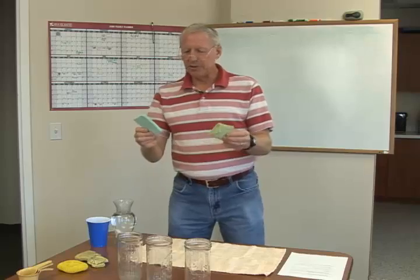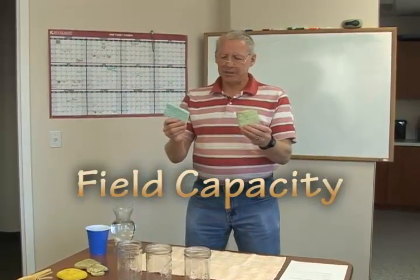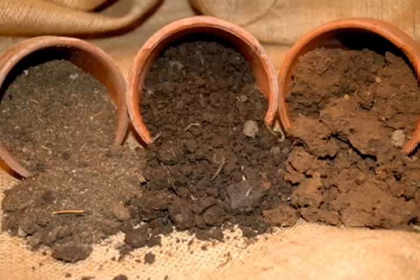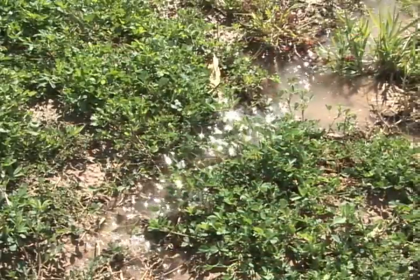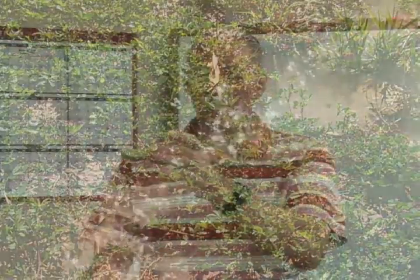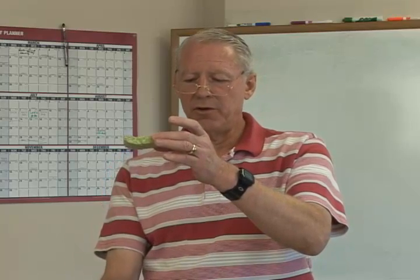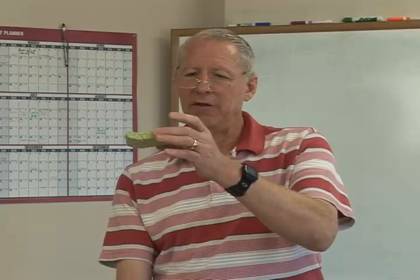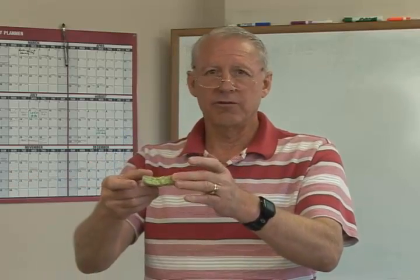The other concept I want us to learn is called field capacity. Each soil, depending on soil texture, structure, and the amount of organic matter, will hold a certain amount of water under the pull of gravity. Once you add any more water, that water continues down through the profile and eventually enters the groundwater and return flows into river systems.